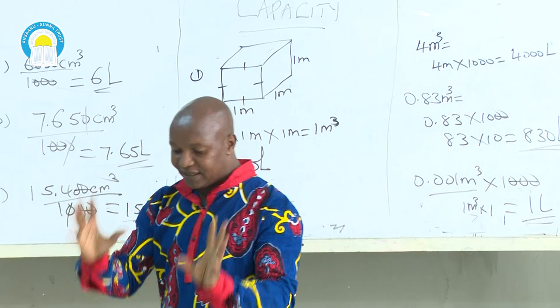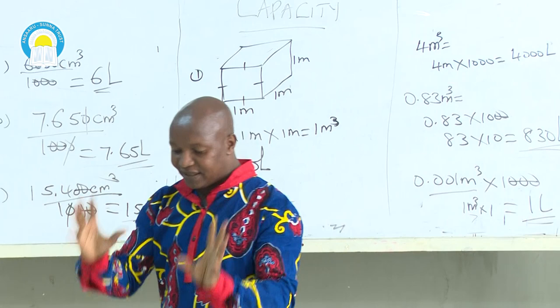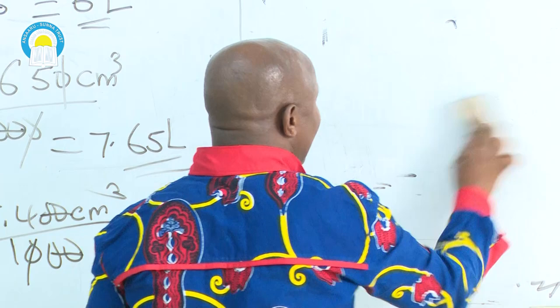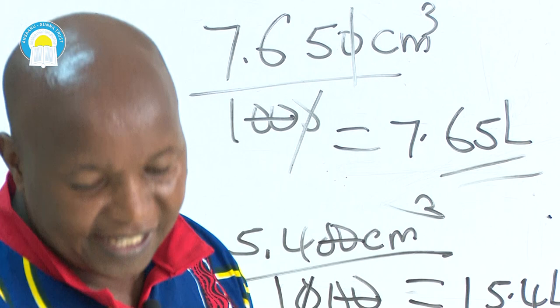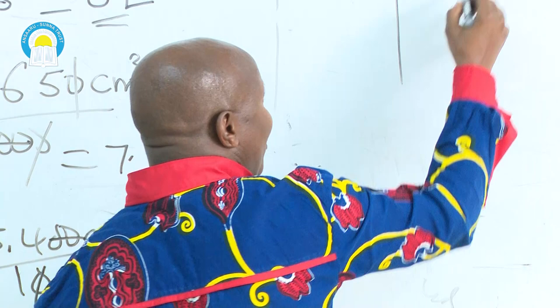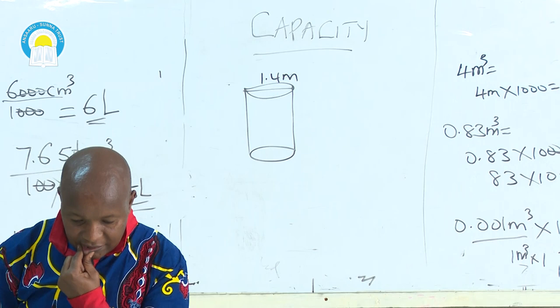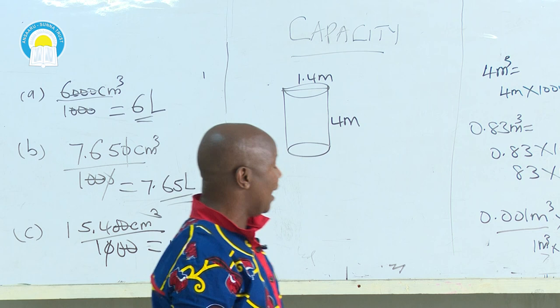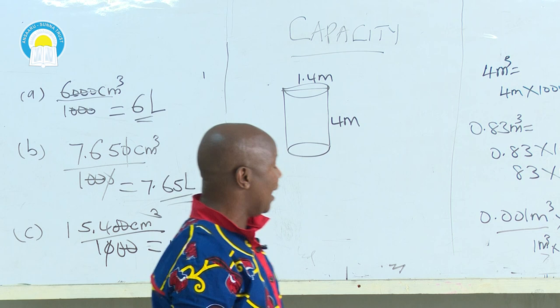Question: year 2013, question number 38. You are given a cylinder, and the examiner is only asking for the capacity of that container in liters. The examiner gives you a cylinder where the diameter is 1.4 meters and the height is 4 meters. The question is: what is the capacity of the same container in liters?